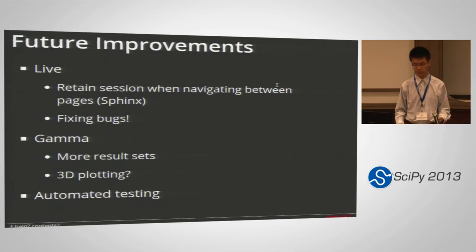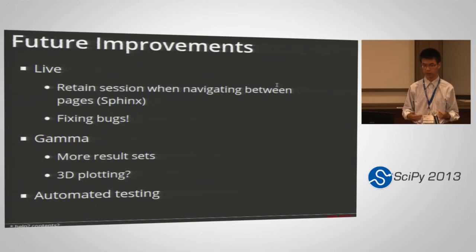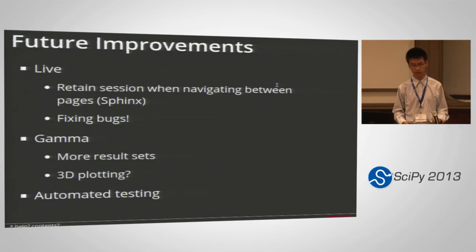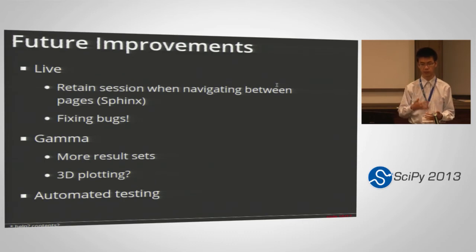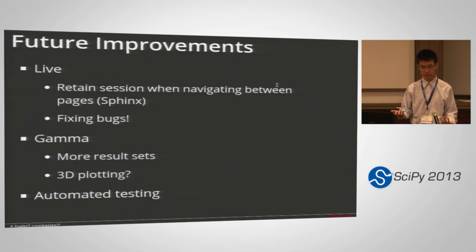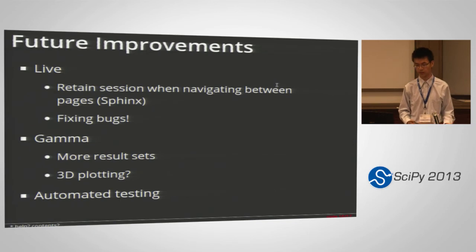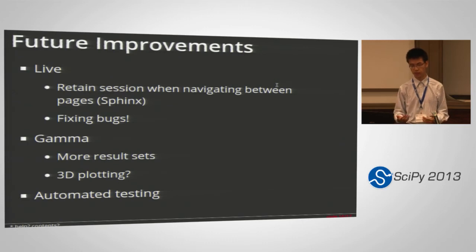There are a lot of improvements we can make to both applications. For Live, we need a better way to retain the session on the server, and there are lots of bugs. For the Sphinx extension, we need to preserve the user session when navigating between pages. For Gamma, we can always use more result sets — features like 3D plotting or Matplotlib integration would be useful. We'd also like to have automated testing so that when we make changes, we don't have to manually test each webpage.